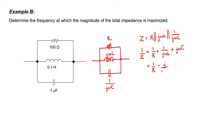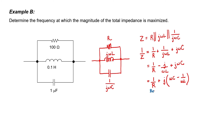Elements in parallel add by reciprocals, so the equation is rewritten in terms of simple addition. The quantity 1/j equals -j. Factoring j out of the final two terms gives us a single complex number with clear real and imaginary parts: the real part is 1/R, and the imaginary part is a function of the capacitance and inductance. Since we're trying to maximize the magnitude of Z, it's equivalent to minimizing the magnitude of 1/Z.